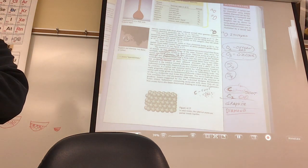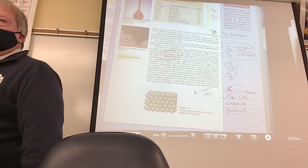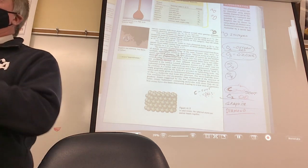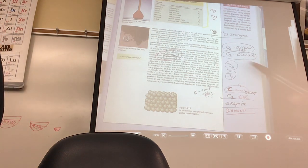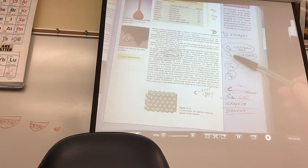But allotropes are different. Allotropes are kind of like diatomic except the elements may not be diatomic, they might be triatomic. There's at least two or three kinds of sulfur and phosphorus. There's phosphorus five, phosphorus two.